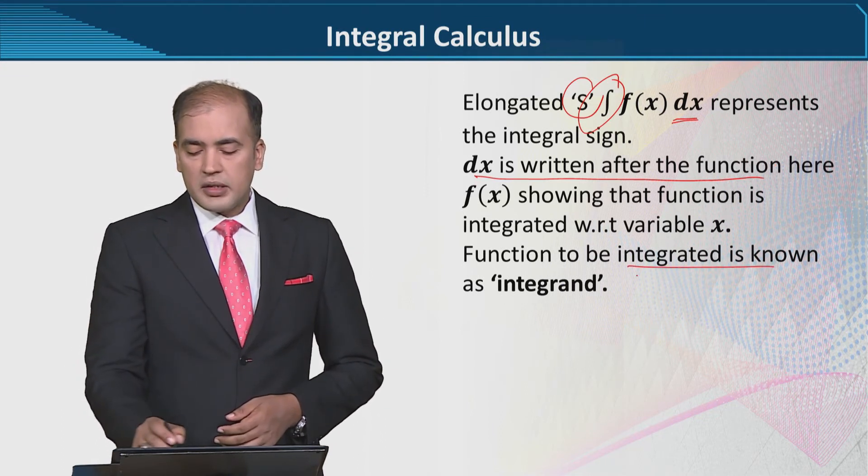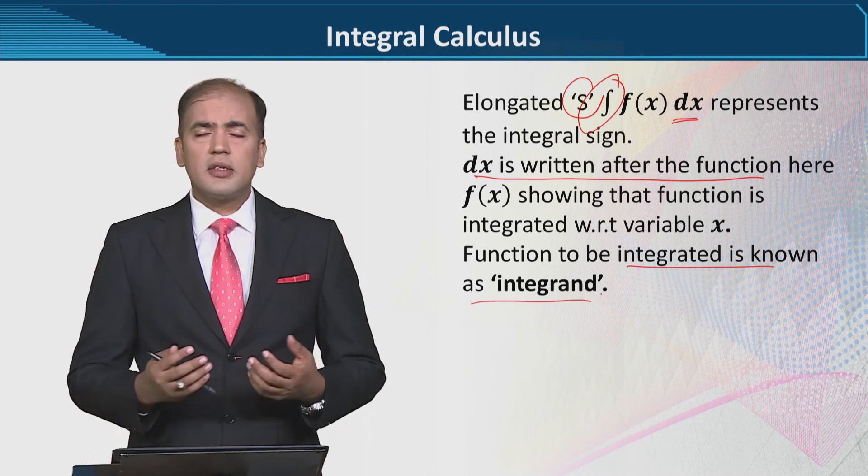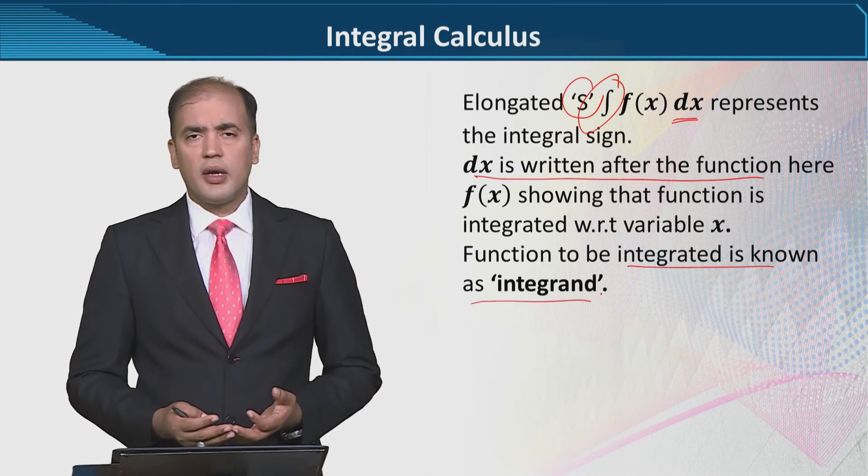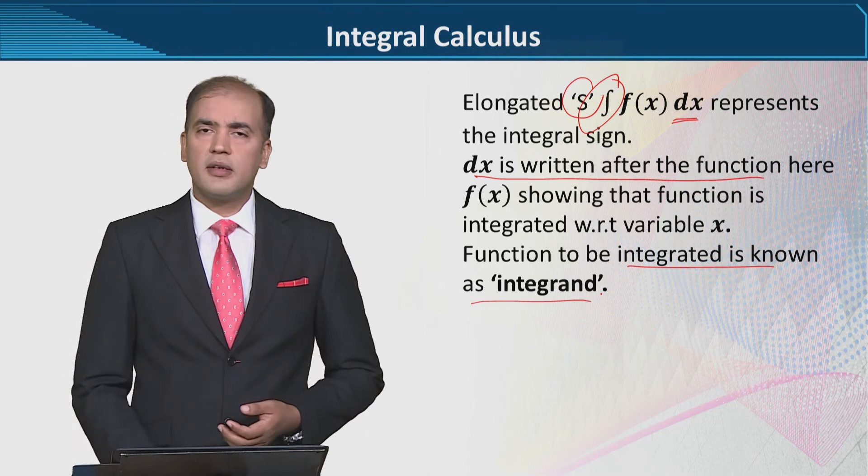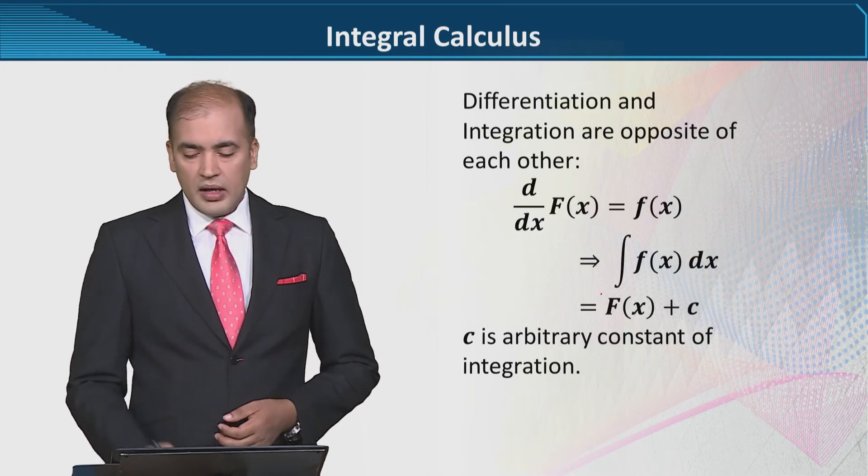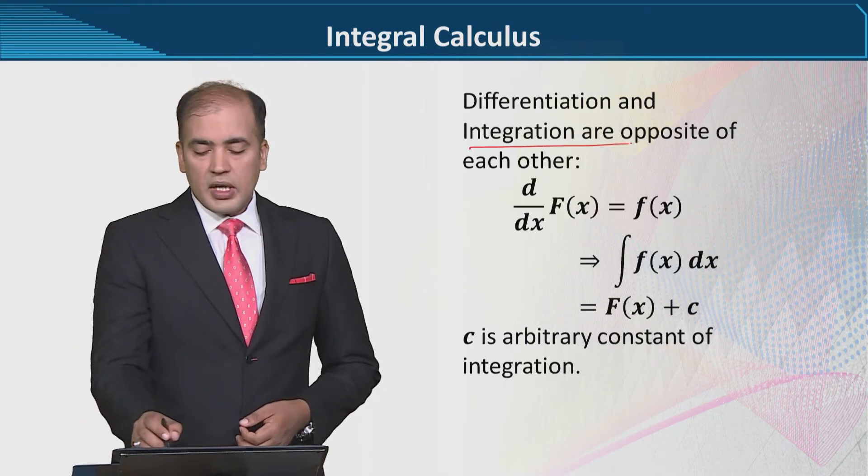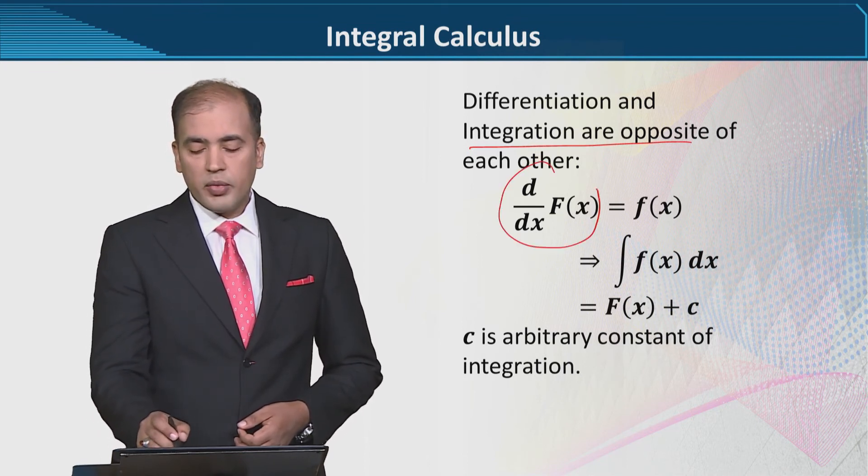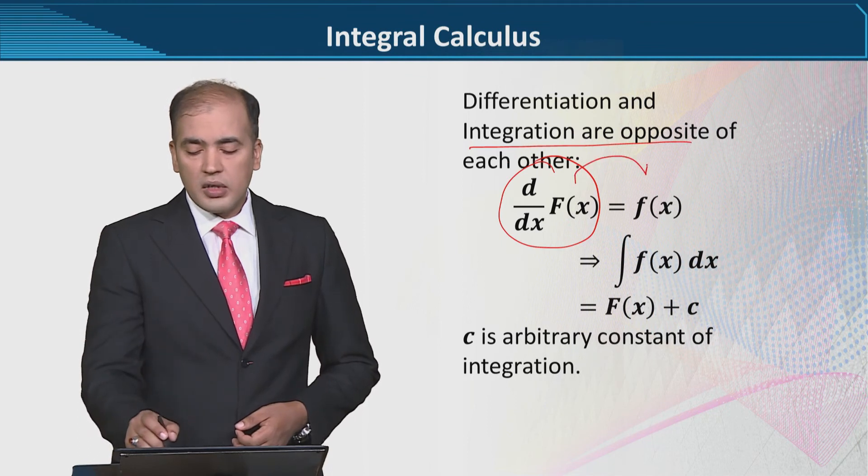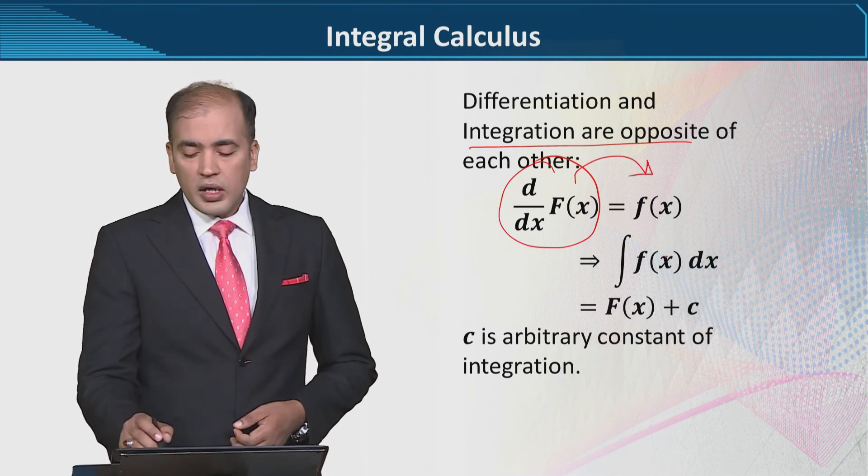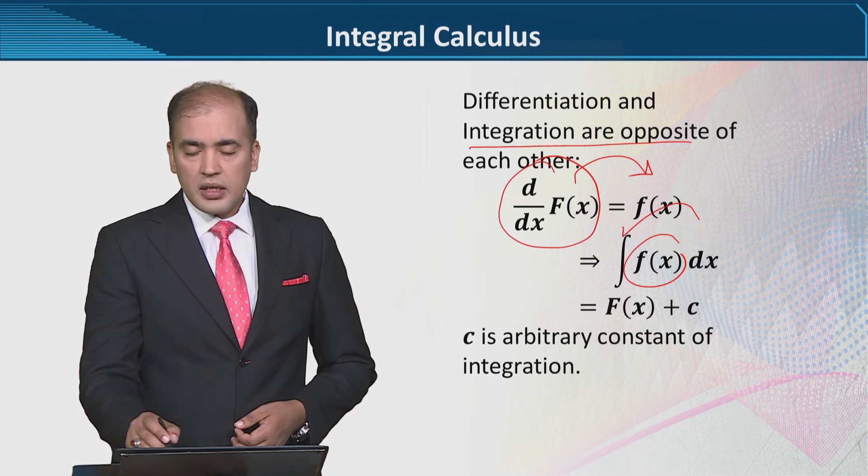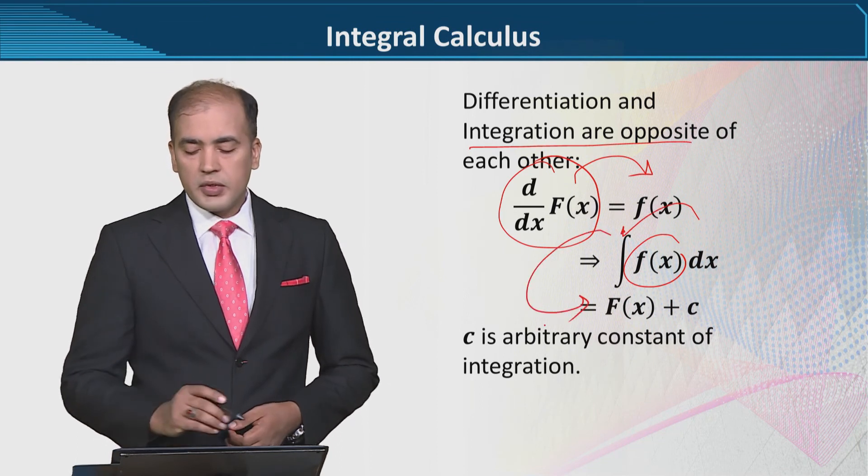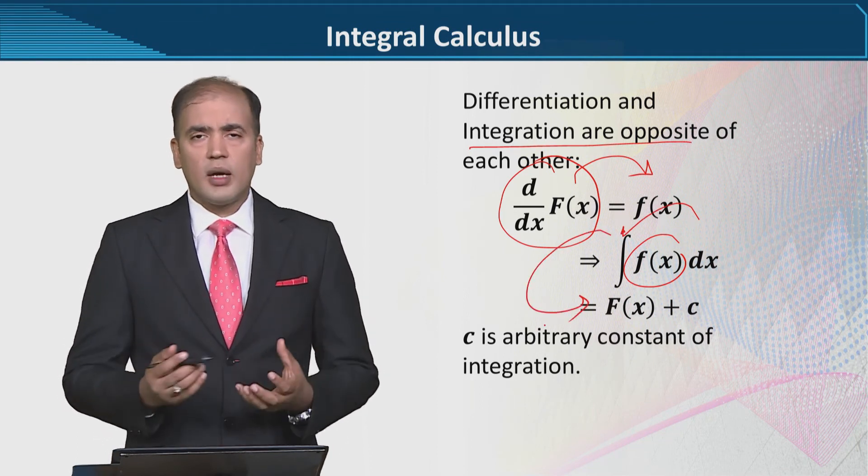Function which is to be integrated is known as integrand. Jis function ki hum integration kar rahe hain, perform kar rahe hain, usse hum kehate hain integrand. Differentiation or integration aapos mein opposite hote hain. Yahan par isse hum mathematically likh rahe hain. Ke agar primitive ka derivative liya jaye, to derivative develop hota hai. Or agar derivative ki integration ki jaye, to waapis primitive establish ho jata hai.